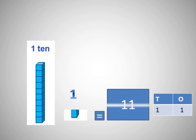In this picture you can see one ten and one one. So, it is equal to eleven. In tens place you will write one and in ones place you will write one. So, it is eleven.